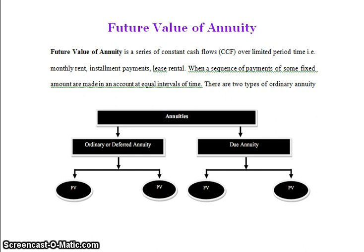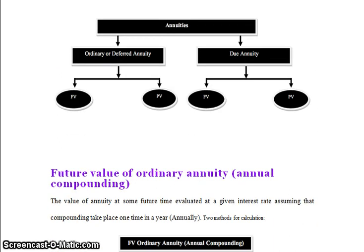There are two types of annuity: ordinary (or deferred) annuity and due annuity. Ordinary or deferred annuity is divided into future value and present value. Due annuity is also divided into future value and present value.